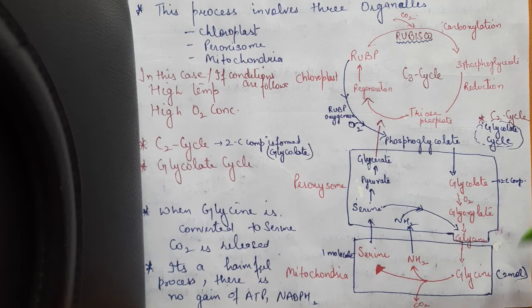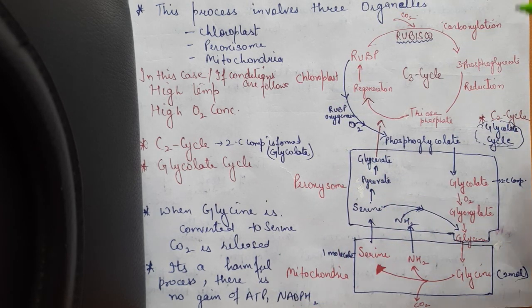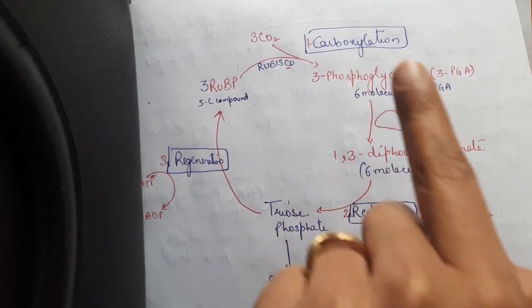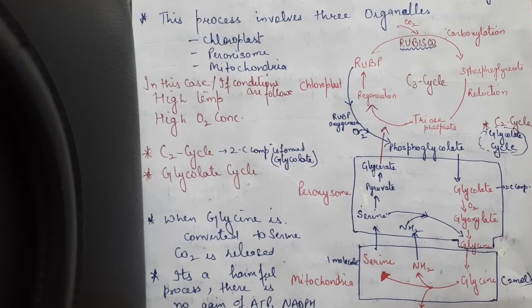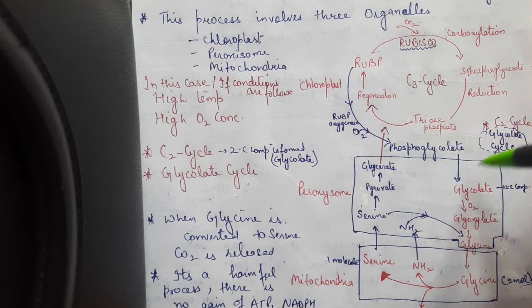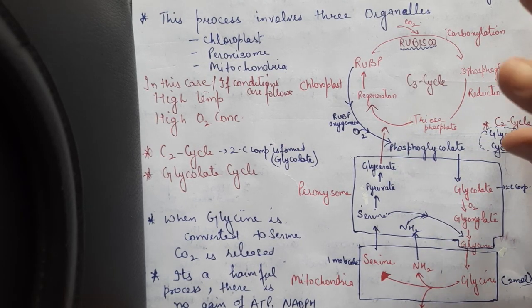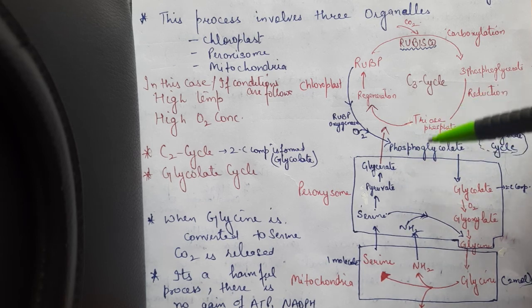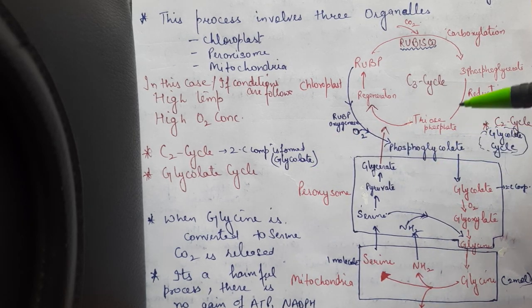This cycle is also called the C2 cycle. In the Calvin cycle, when RuBP accepts carbon dioxide, the first stable compound formed is phosphoglycerate — a 3-carbon compound — that is why it is called C3. Here, the first stable compound formed will be a 2-carbon compound, so this cycle is called the C2 cycle. That compound's name is phosphoglycolate, which is why it is also called the glycolate cycle.